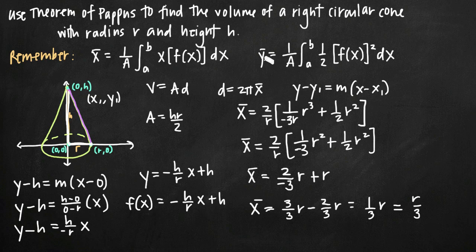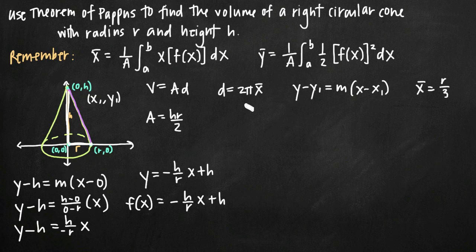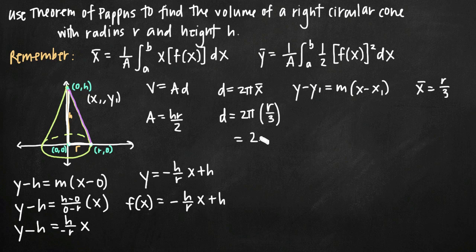We could find the y-coordinate if we wanted to, but we only need the x-coordinate for the distance formula. The x-coordinate is r/3, so distance equals 2π times r/3, which gives us 2πr/3.